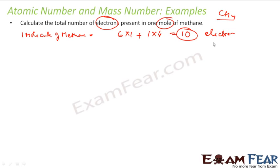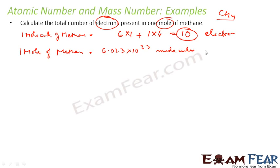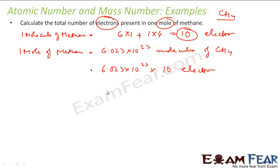One mole of methane is nothing but 6.023×10²³ molecules of methane. These many molecules of methane, and one molecule has 10 electrons, so the total electrons = 6.023×10²³ × 10 = 6.023×10²⁴ electrons. That is the answer.